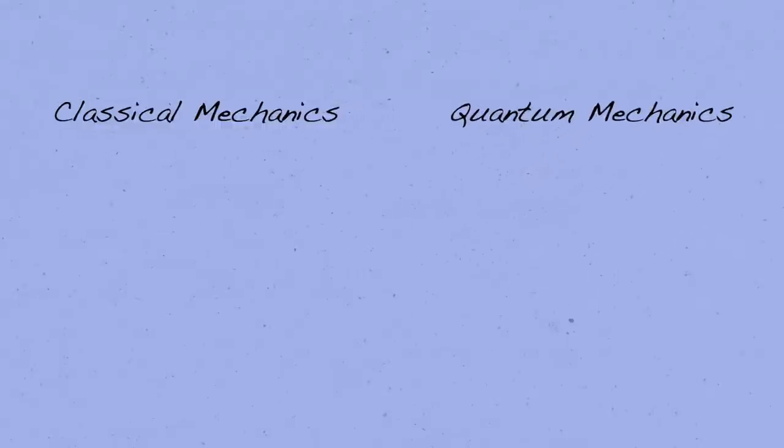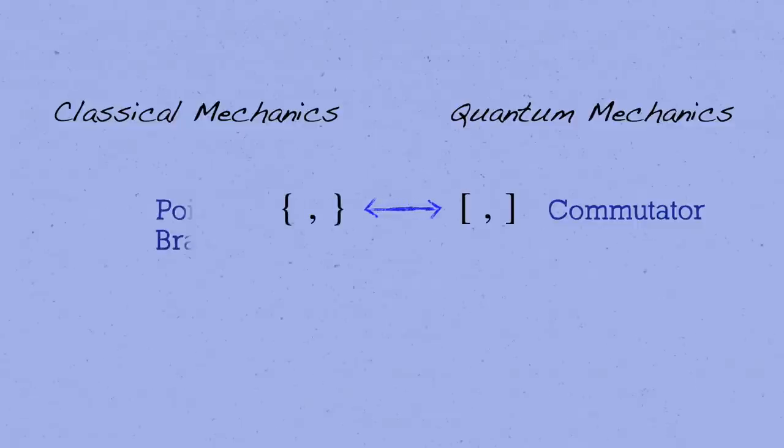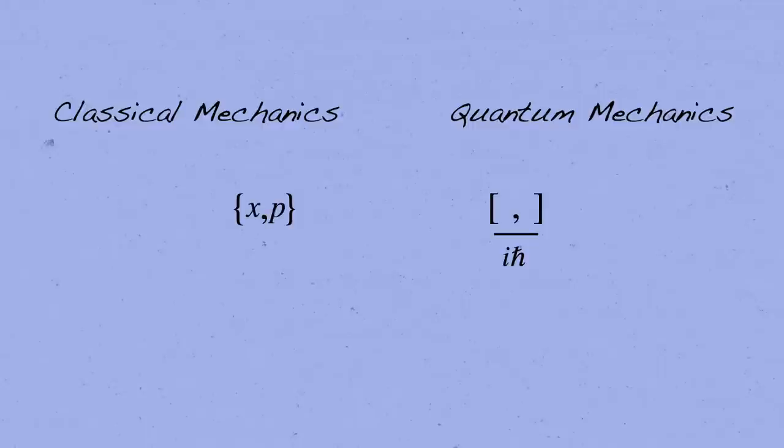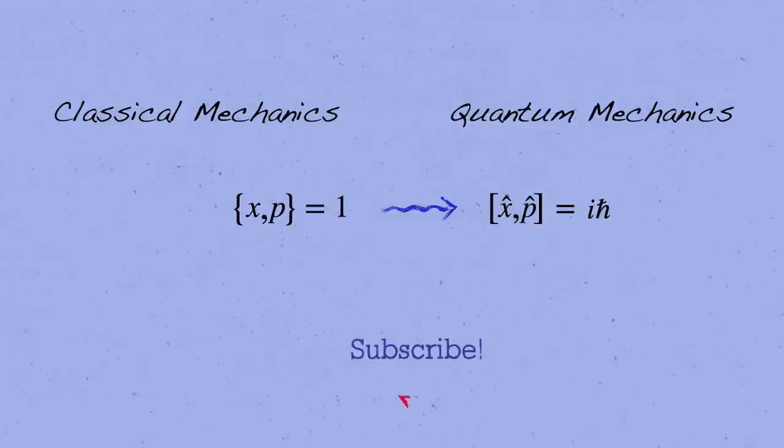But there are close parallels between many of the equations of quantum and classical mechanics, as I've told you about in the last couple of mini lessons here on the channel. For example, we've seen that the quantum commutator of operators plays a similar role as a classical operation called the Poisson bracket, up to a factor of i h bar. In particular, the Poisson bracket of the position x and momentum p in classical mechanics is x bracket p equals 1. And if we apply the rule to turn this Poisson bracket into a commutator bracket divided by i h bar, we indeed get the canonical commutation relation. I'll link the video about that up in the corner if you haven't seen it yet.